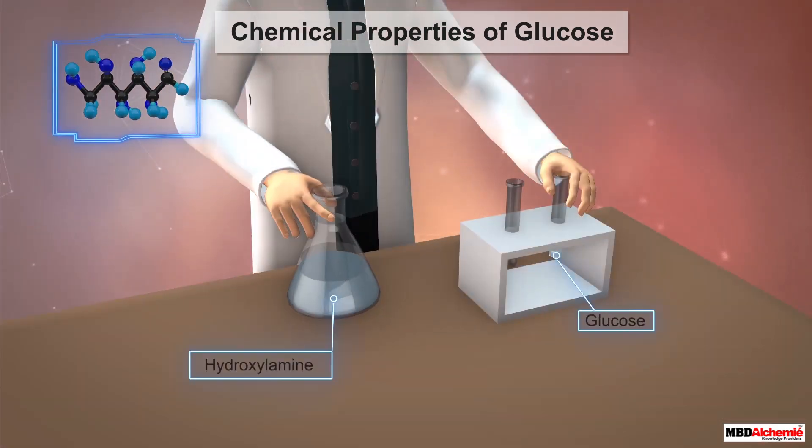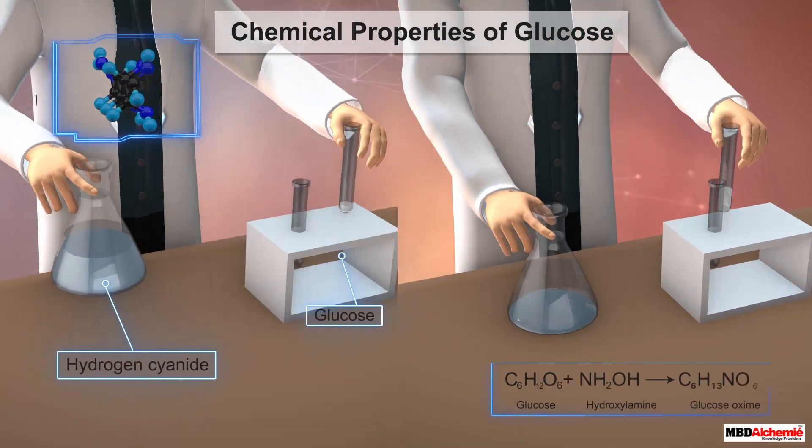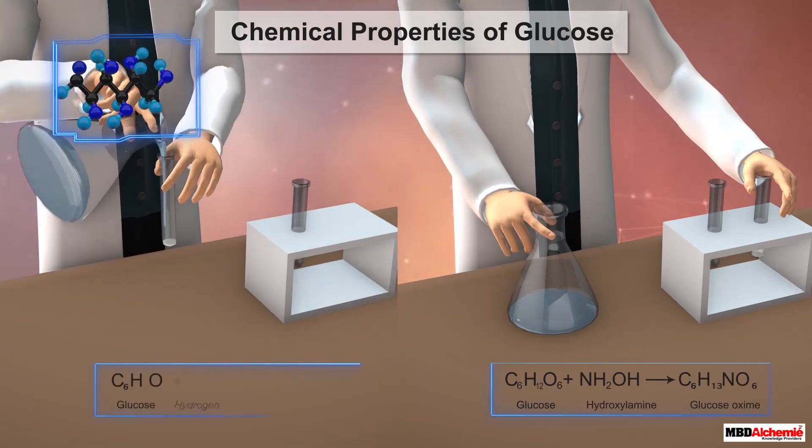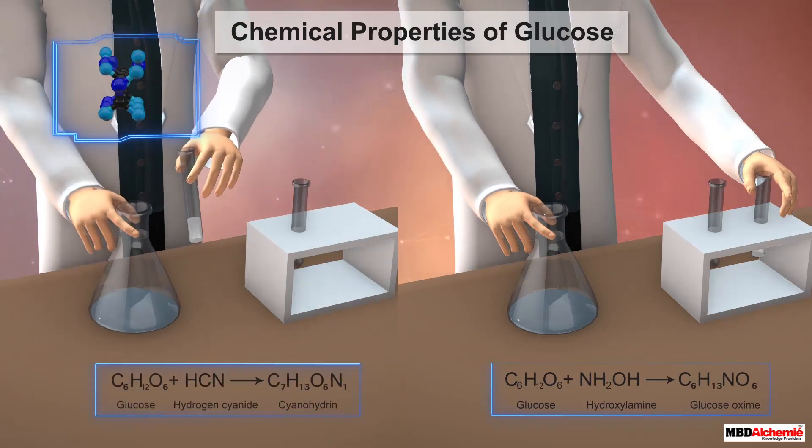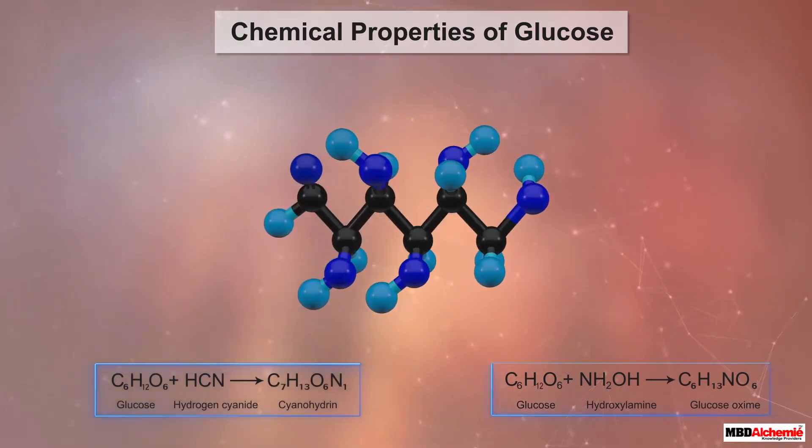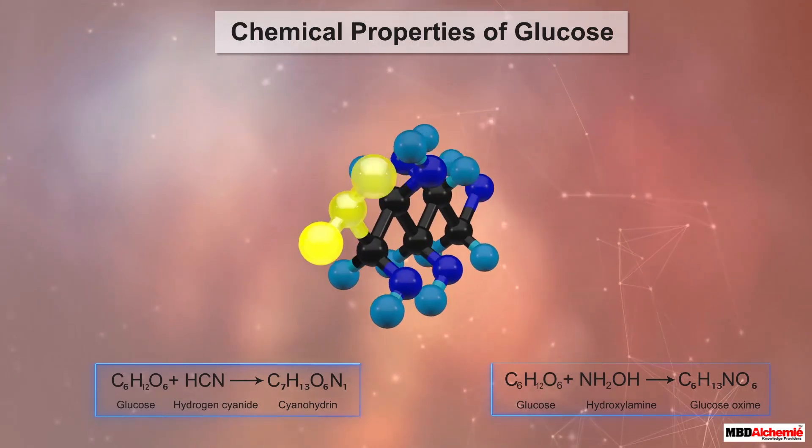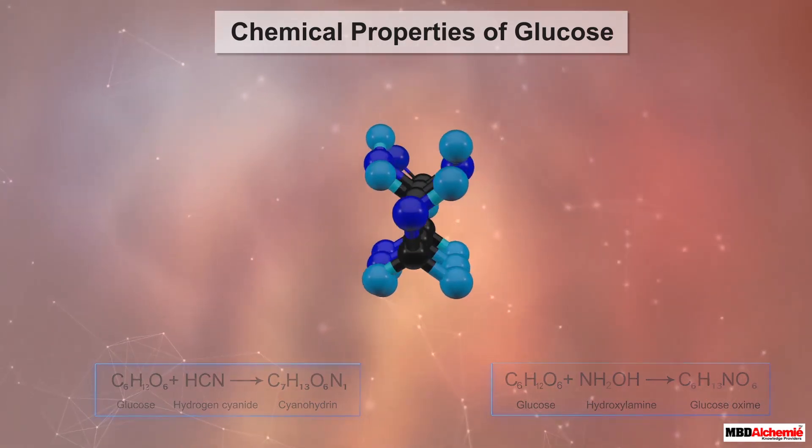The reaction of glucose with hydroxylamine forms an oxime, whereas that with hydrogen cyanide forms a cyanohydrin. These reactions are characteristic of carbonyl compounds, thus confirming the presence of a carbonyl group in glucose.